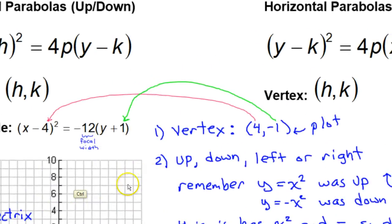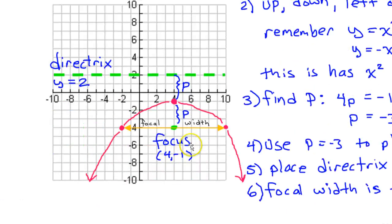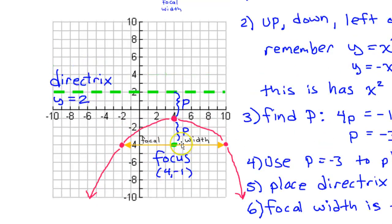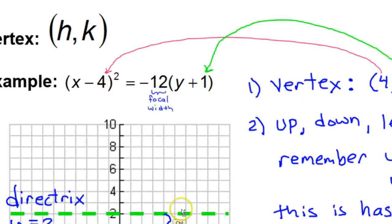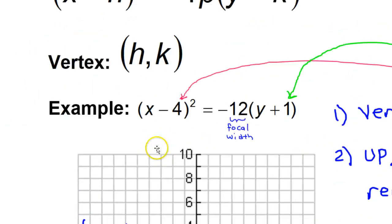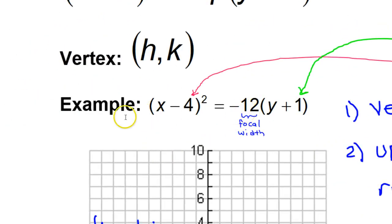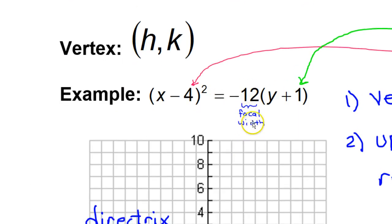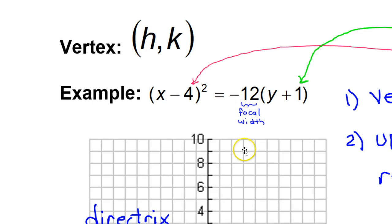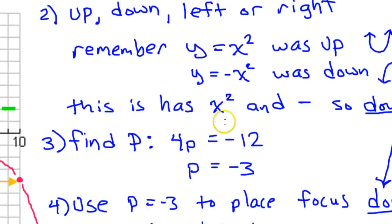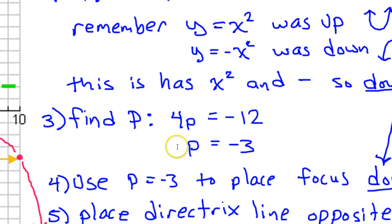One more thing: the focal width, the width of the parabola at the focus, will be found right in the equation. For this example, the 12 is the focal width. Focal width is always positive, so if this is negative 12, I'm just going to say the focal width is 12. The P value, however, can be negative.